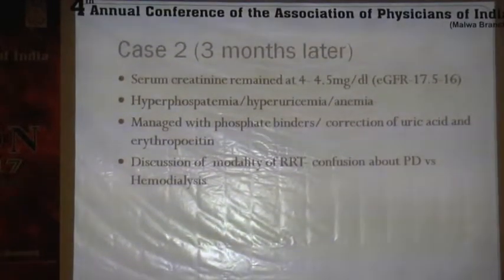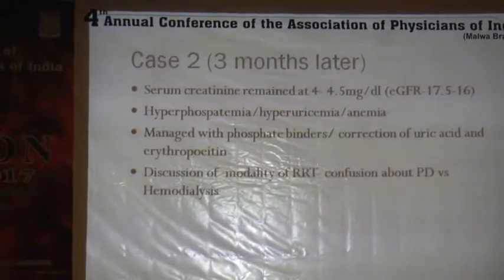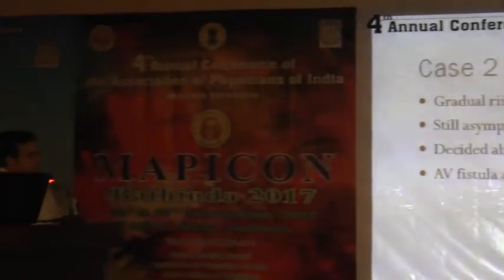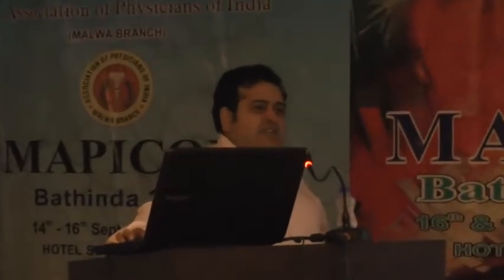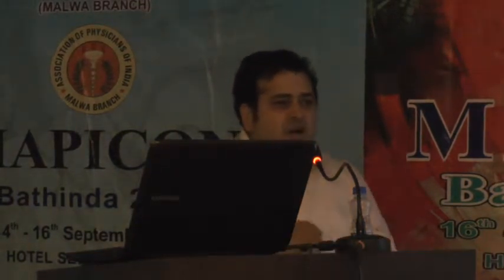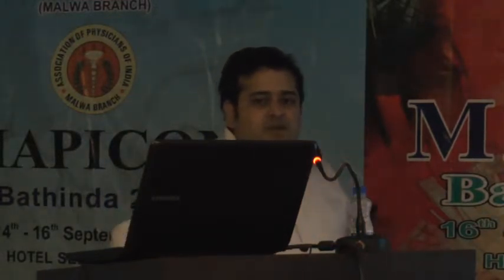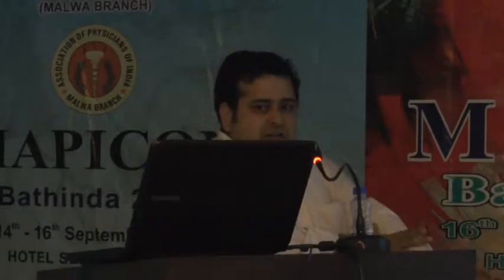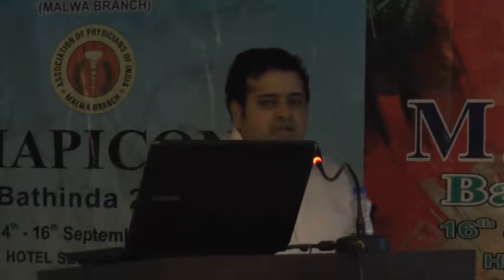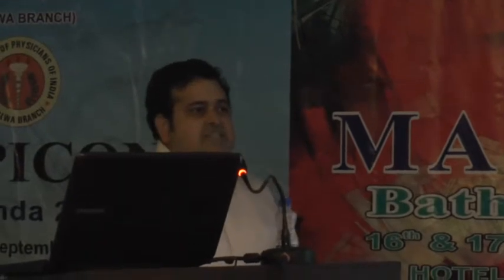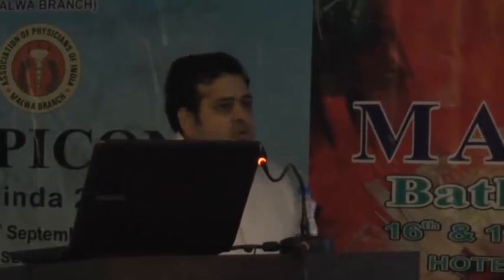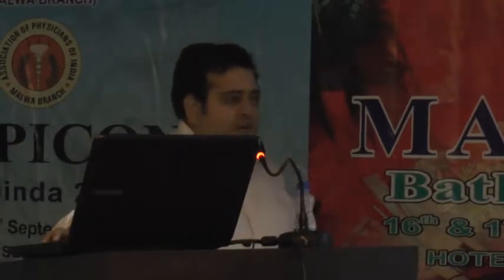We discussed modality of RRT — whether PD or hemodialysis. He had no donors in the family and was not willing for transplant. Over three months creatinine rose gradually to five; he was still asymptomatic and decided to go for hemodialysis. A left distal AV fistula was made. Two months later creatinine rose to seven; there was limb edema and the fistula had not fully developed. Branches were tied off and a good fistula segment was available. Creatinine came to eight, he decided to go ahead with dialysis, was initiated on twice-weekly dialysis, and two years on he is receiving three times weekly dialysis and doing quite well.